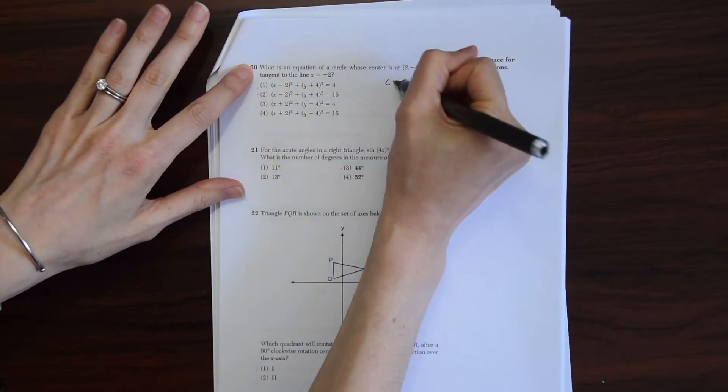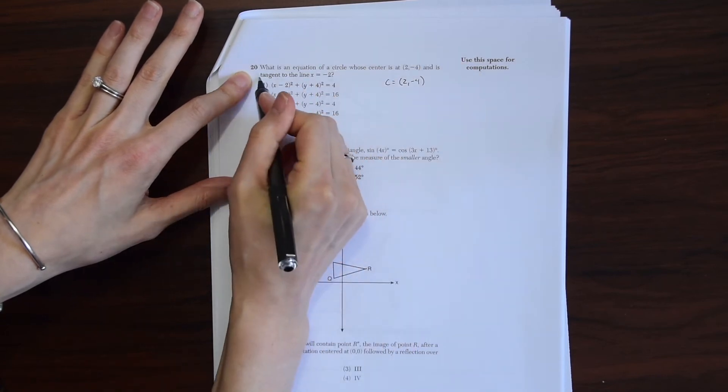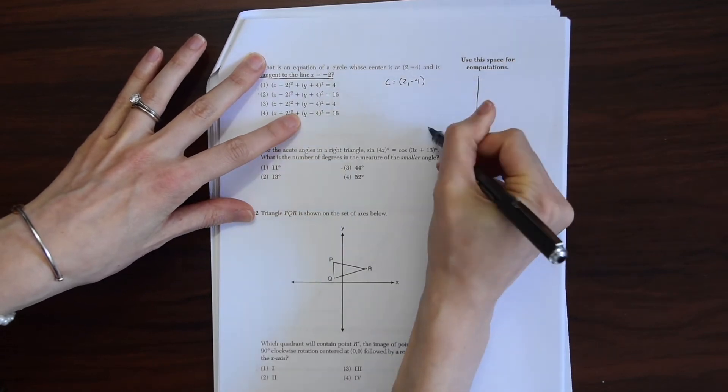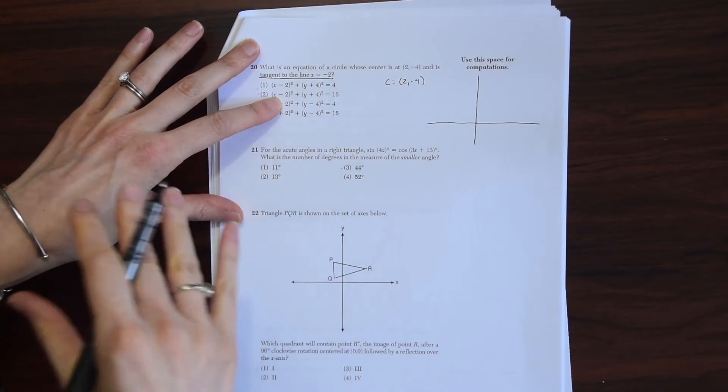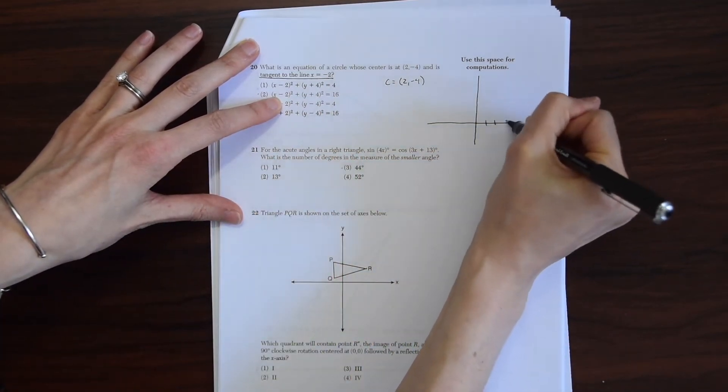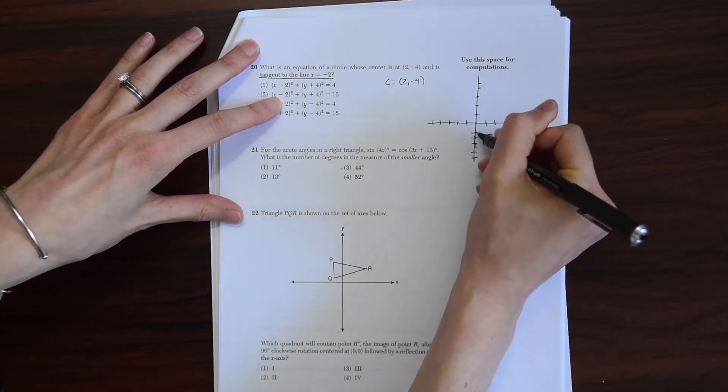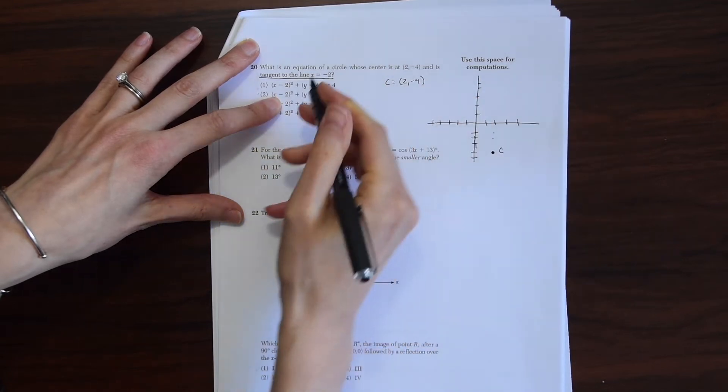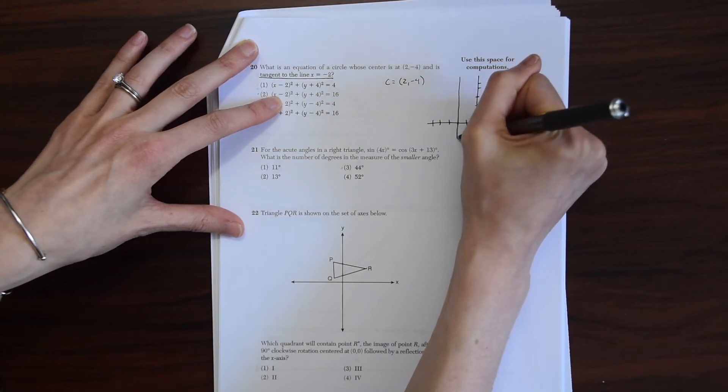What is an equation of a circle whose center is at 2, negative 4 and tangent to the line x equals negative 2? So I'm going to just draw this out. There's this line that's going to be tangent to the circle. Our center is at 2, negative 4. So here's 2, 1, 2, 3, 4. So here's our center and then this line x equals negative 2.